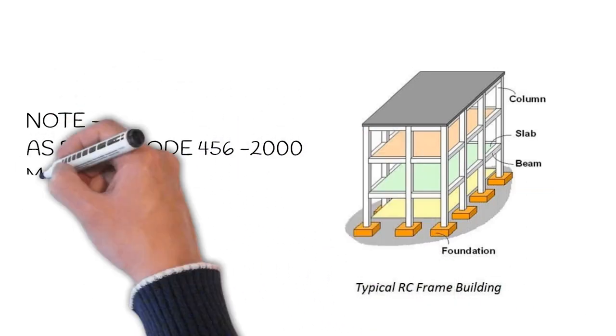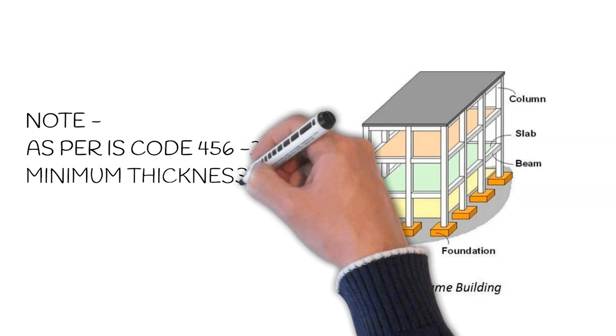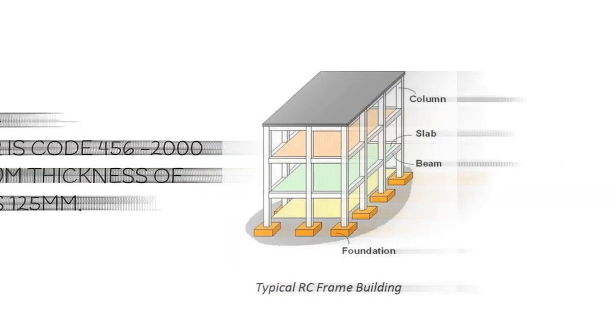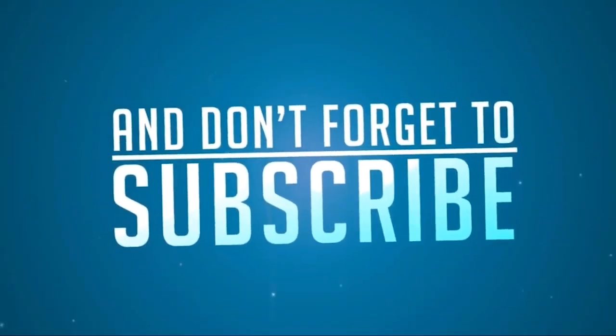At last, please always keep in mind that while designing a slab, always remember to consider IS 456, which says the minimum thickness of slab is 125 mm. Friends, hope you have liked this video, so please share and subscribe to our channel.